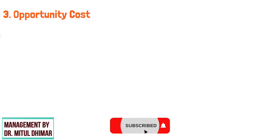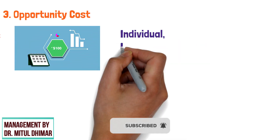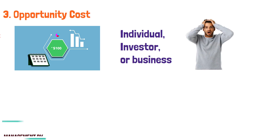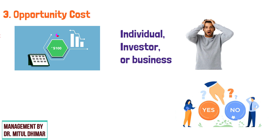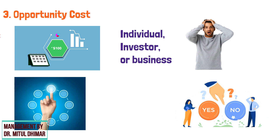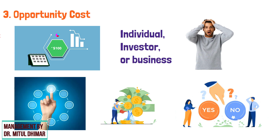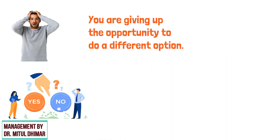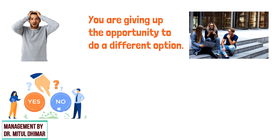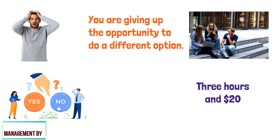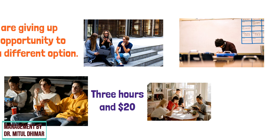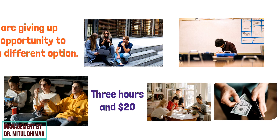Number 3: Opportunity Cost. Opportunity cost represents the potential benefit that an individual, investor, or business misses out on when choosing one alternative over another. More simply, if you choose one activity, for example an investment, you are giving up the opportunity to do a different option. For example, a student spends 3 hours and $20 at the movie the night before an exam. The opportunity cost is the time spent studying and that money spent on something else.